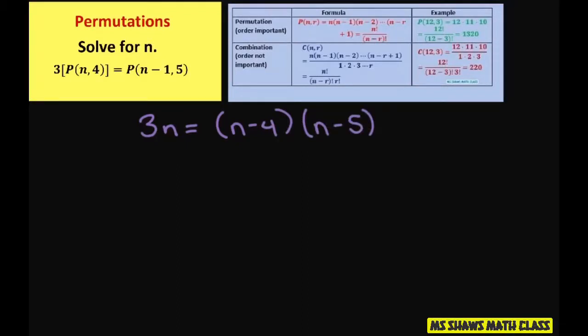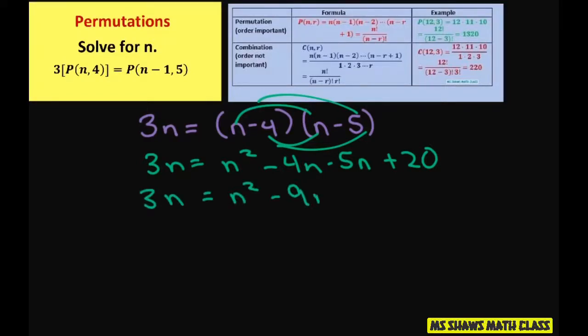Now we have 3n. Let me just FOIL this out. So get n squared minus 4n minus 5n plus 20. So we have 3n equals n squared minus 9n plus 20. Let's subtract the 3n from both sides because this is a quadratic.